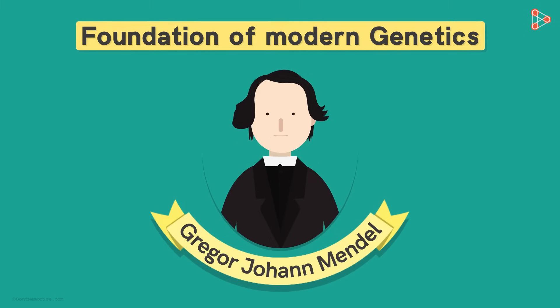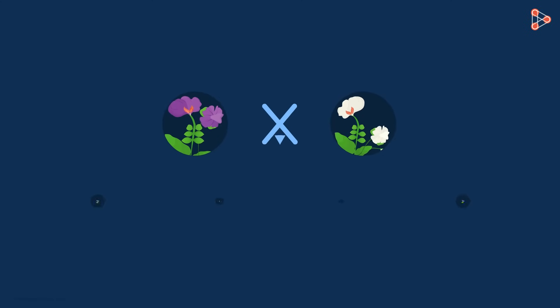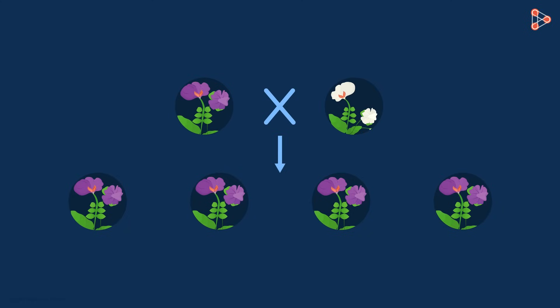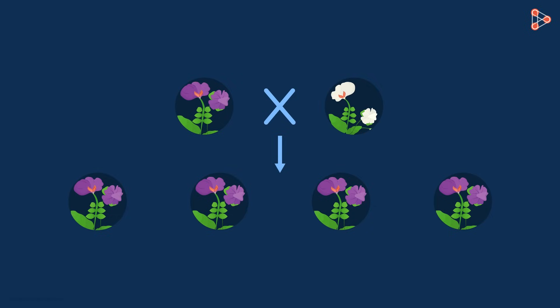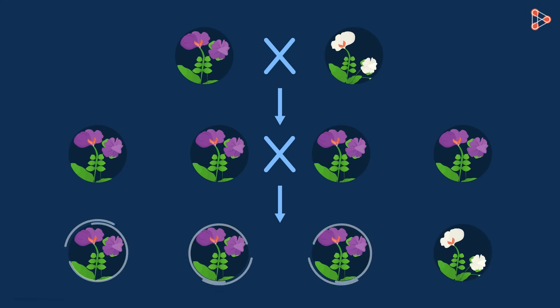Gregor Mendel's experiments laid the foundation of modern-day genetics. We have seen so far that Mendel crossed a purple-flowered plant with a white-flowered plant. He then collected the seeds and grew new plants from them. Astonishingly, he found that all the offsprings had purple-coloured flowers. On crossing these plants among themselves, Mendel surprisingly obtained three purple-flowered plants and one white-flowered plant.